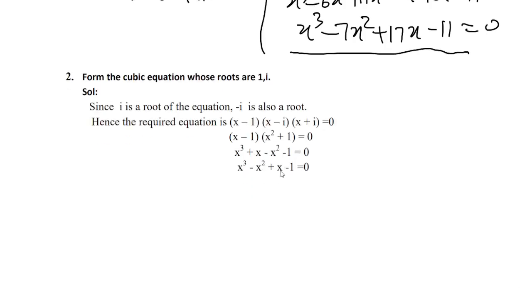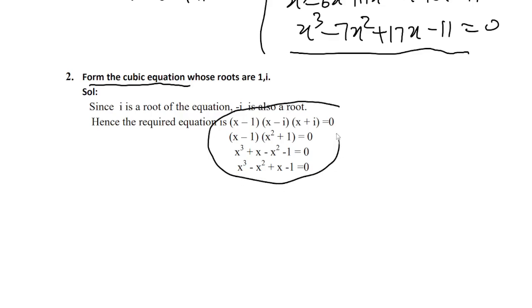Next, form the cubic equation. This is the model problem. So x minus 1 is one root, and the other root is minus i. Here i is one of the roots, so the conjugate is minus i. We can do this using another method.